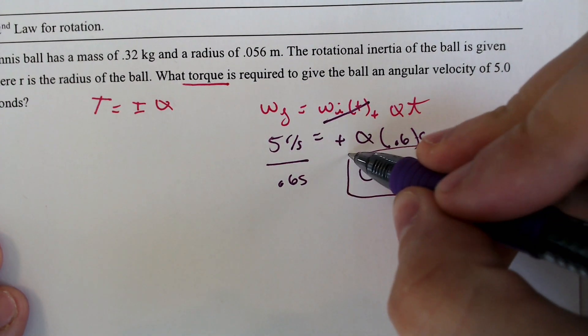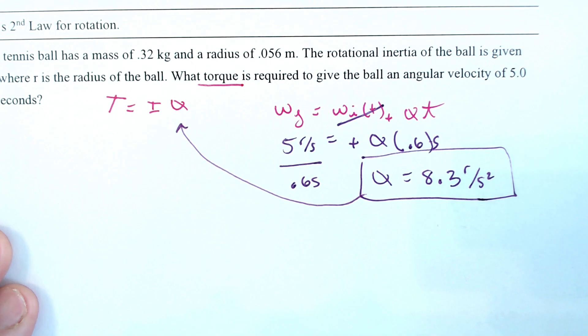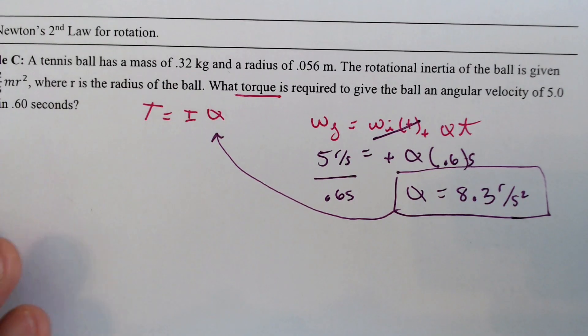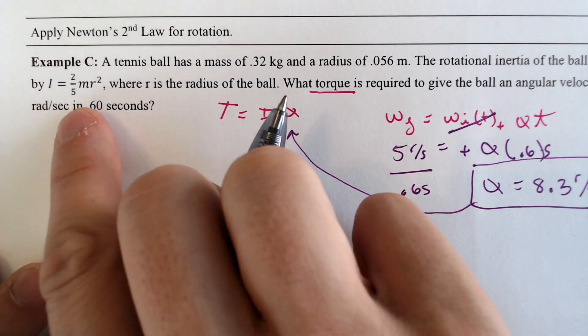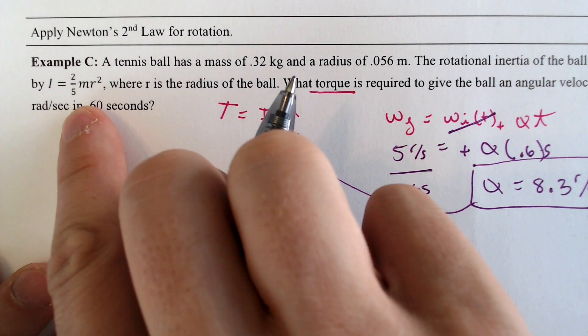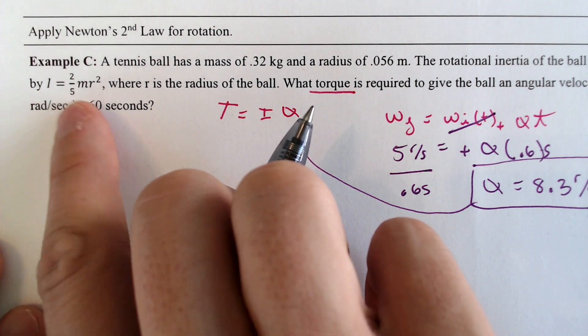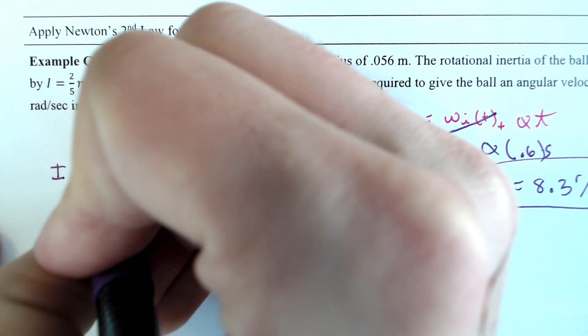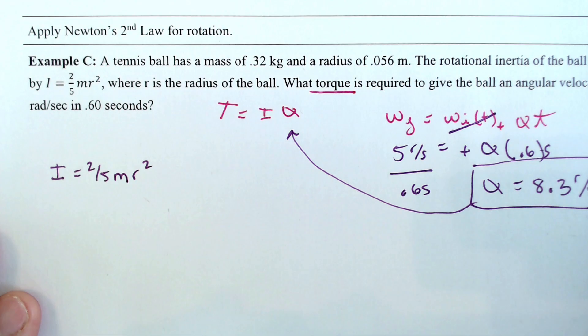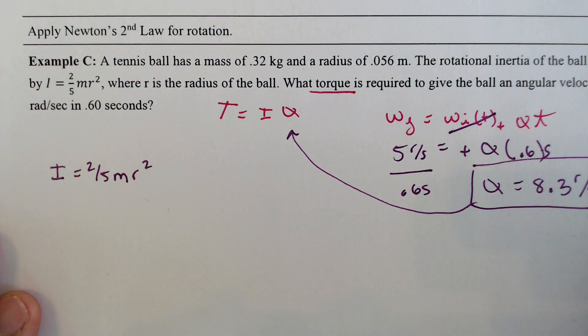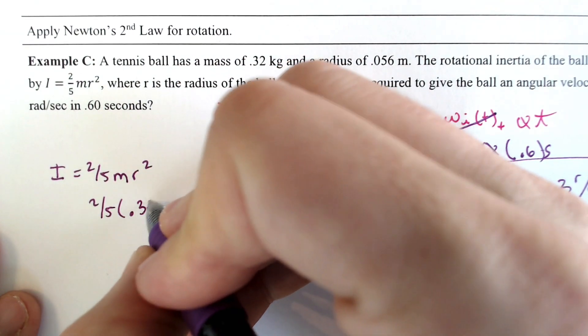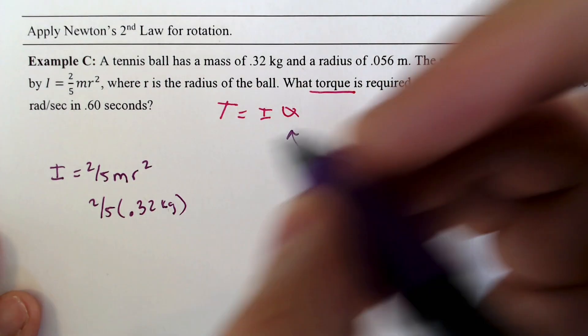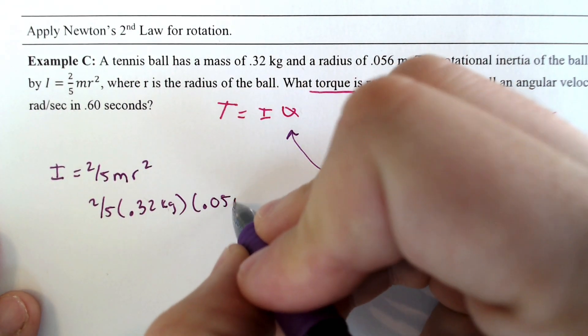You needed that because we're looking for torque in this problem and we needed to plug that in. We do kind of have our moment of inertia part because we have the formula. We can plug everything else in to find that moment of inertia. So I is equal to 2/5 MR squared. And therefore, we have a mass of 0.32, a radius of 0.056. If we plug that stuff in, 0.32 kilograms times 0.056 meters squared.